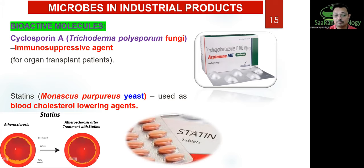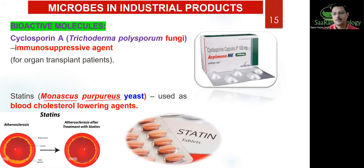Obesity and cholesterol are big problems. To reduce blood cholesterol levels — specifically bad cholesterol, LDL — we use a molecule called statins. Statins are obtained from a yeast called Monascus purpureus. Names are very very important — take a note of this name. Different categories of statins are available in the market — atorvastatin is one. So again: organism name — Monascus purpureus; category — yeast; product — statins; role — blood cholesterol-lowering agent. Keep careful notes on bioactive molecules, as many questions come from here.